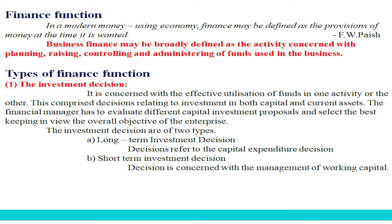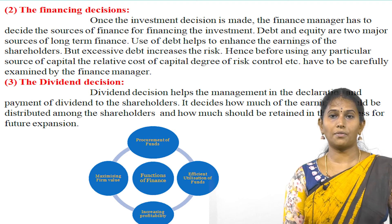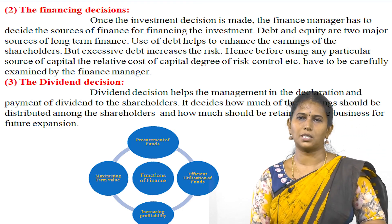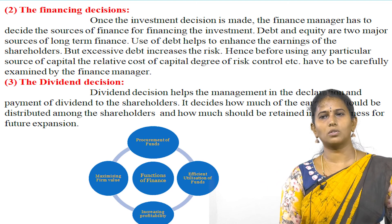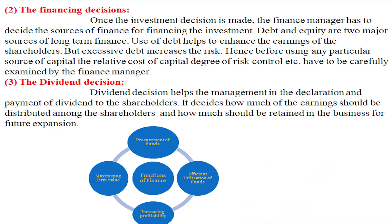Short-term investment decision concerns the management of working capital. The second type of finance decision is the financing decision. It is the most important decision of the management. The finance manager has to decide the source of finance for financing the investment. Debt and equity are the two major sources of long-term finance. Use of debt helps to enhance the earnings of shareholders, but excessive debt increases the risk. Hence, before using any particular source of capital, the relative cost of capital, degree of risk, and control must be carefully examined by the finance manager.